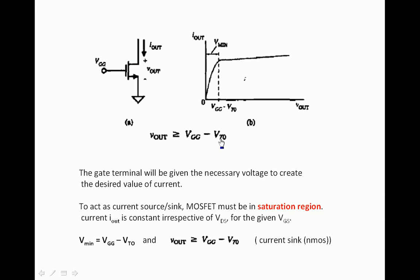Vt is the threshold voltage. For an N-MOS or P-MOS to act as a current sink or current source, it must be in the saturation region. The minimum voltage across the output terminals to get current independent of voltage is VGG minus VT0, which is the condition for saturation. The minimum voltage you must apply is VGG minus VT0, or it can be more than that. So the minimum is VGG minus VT0.